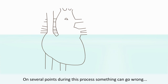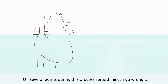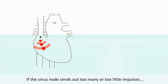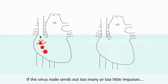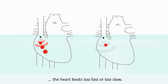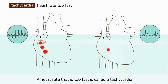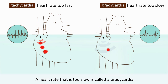On several points during this process something can go wrong, causing the heart to not contract correctly. If the sinus node sends out too many or too few impulses, the heart beats too fast or too slow. A heart rate that is too fast is called a tachycardia. A heart rate that is too slow is called a bradycardia.